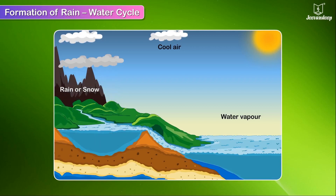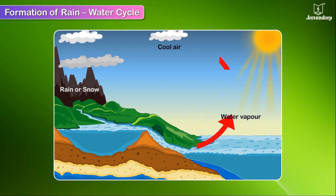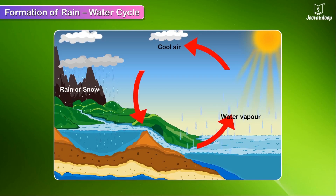Water from rivers, lakes, seas, and oceans evaporates again. This cycle keeps going on in nature. This is called the water cycle.